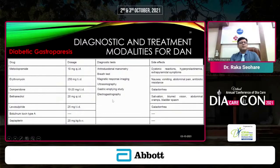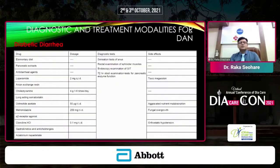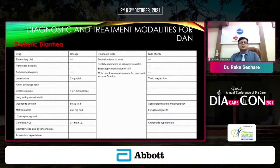For diabetic gastroparesis, drugs that can be used include metoclopramide, erythromycin, domperidone, bethanechol, leuprolide, and botulinum toxin — with careful attention to side effect profiles. Diabetic diarrhea is very common. Investigations include sensation testing of the anus, rectal examination of sphincter muscles, endoscopic examination of the GI tract, 72-hour stool examination, and tests of pancreatic enzyme function. Treatment involves agents used by both physicians and gastroenterologists, and side effect profiles must be scrutinized carefully before initiating therapy.